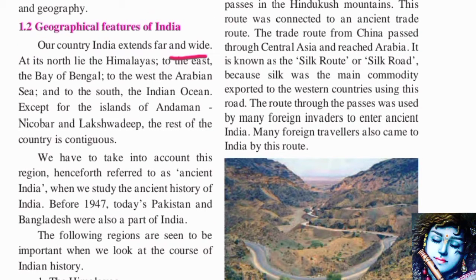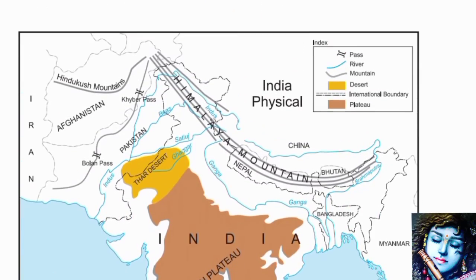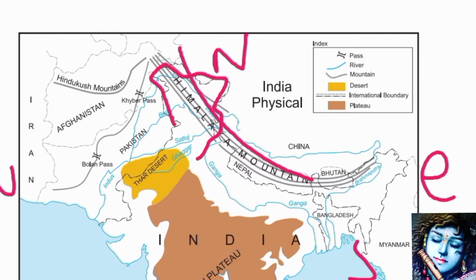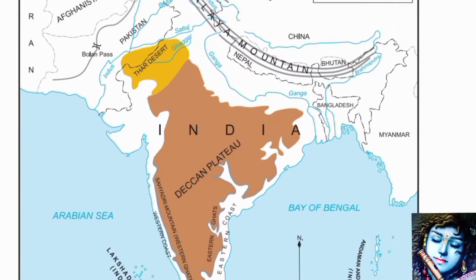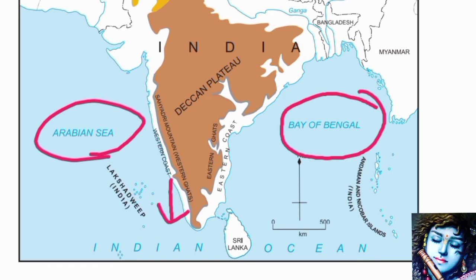Our country India extends far and wide. At its north lie the Himalayas, to the east the Bay of Bengal, to the west the Arabian Sea, and to the south the Indian Ocean. We can see this on the map — in the north is the Himalaya, in the east is the Bay of Bengal, in the west is the Arabian Sea, and in the south is the Indian Ocean.